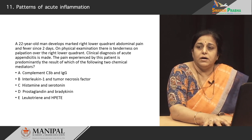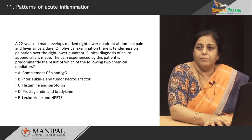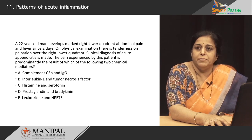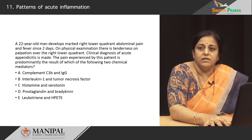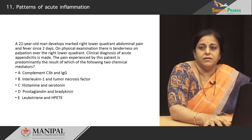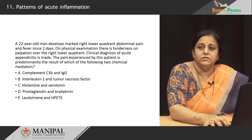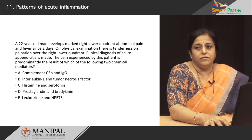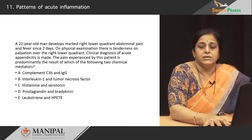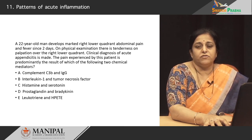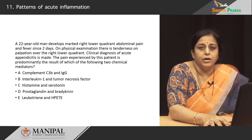Let us try to answer this question: a 22-year-old man develops marked right lower quadrant abdominal pain and fever for two days. On physical examination there is tenderness on palpation over the right lower quadrant, and a clinical diagnosis of acute appendicitis is suggested. The pain is a result of which two chemicals? The options are complement C3b and IgG; interleukins and TNF; histamine and serotonin; or prostaglandins and bradykinin. The correct answer is prostaglandins and bradykinin — the pain in inflammation is caused by prostaglandins and bradykinin. If asked what is responsible for fever, it would be interleukins and tumor necrosis factor.